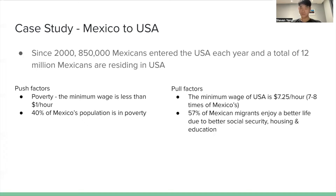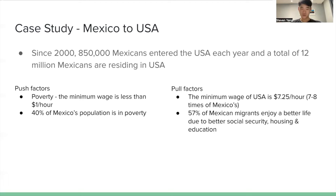That's why pull factors such as the minimum wage in the United States — averaging $7.25 per hour, which is about seven to eight times Mexico's — are very attractive. The fact that 57% of Mexican migrants enjoy a better life in the USA due to better social security, housing, and education definitely attracts Mexicans to move to the USA.